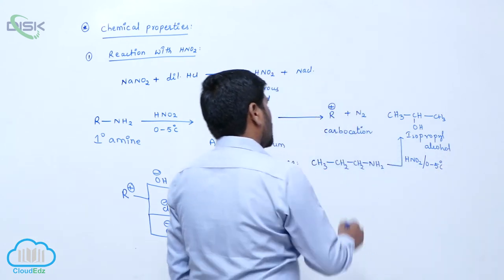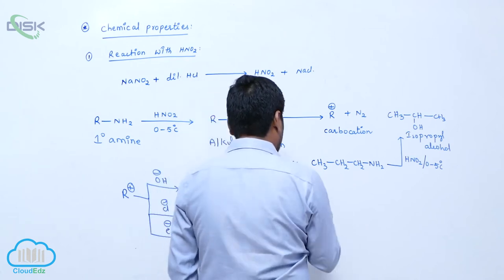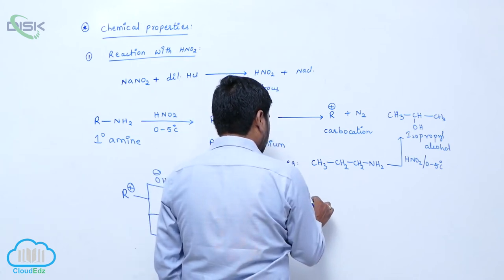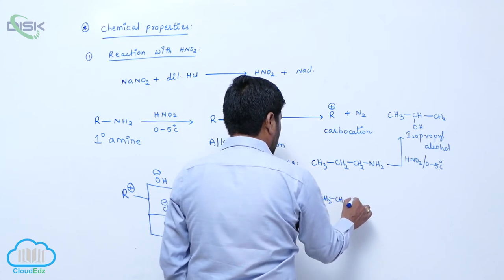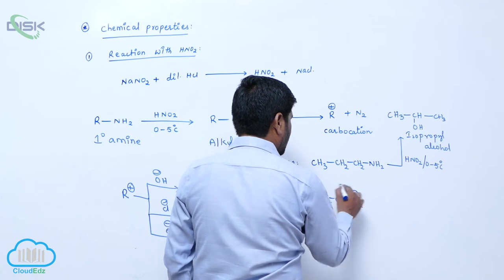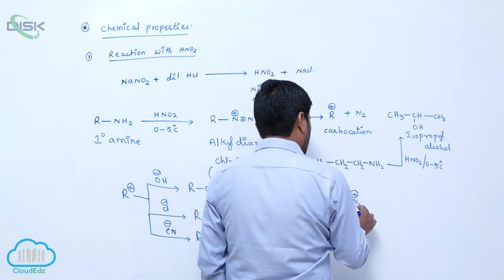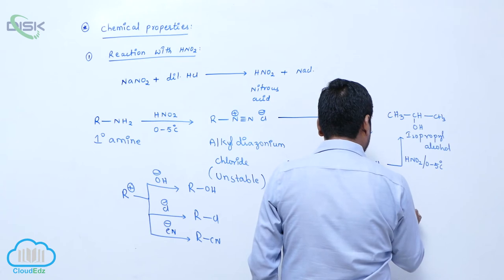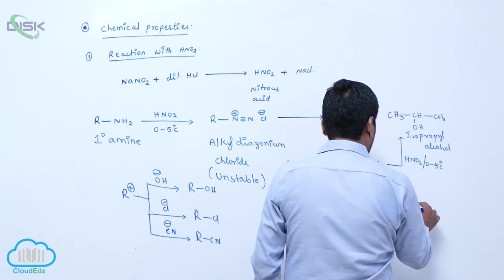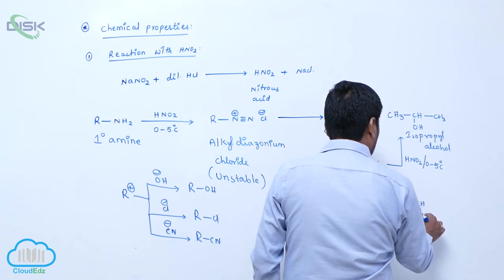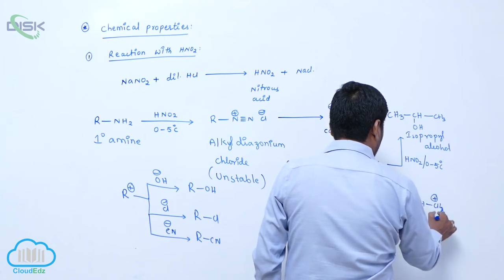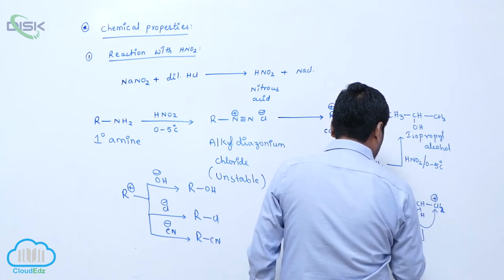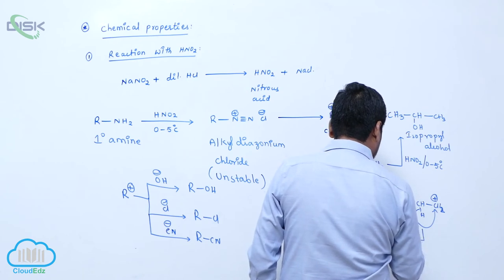The reason is, first it forms CH3-CH2-CH2-N2+. Loss of N2 molecule takes place. It forms an unstable 1° carbocation. So immediately hydrogen shift, H- shift, takes place.